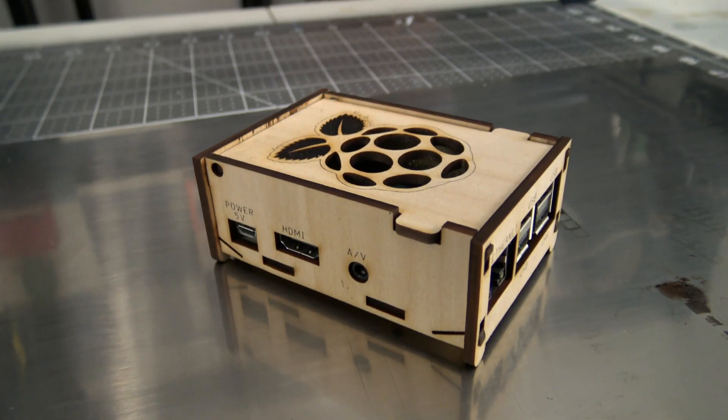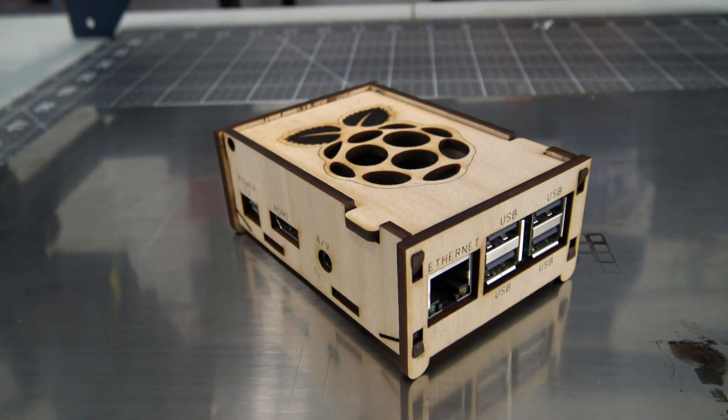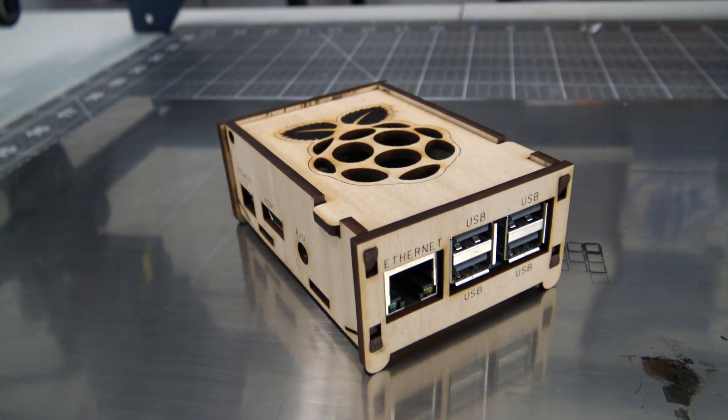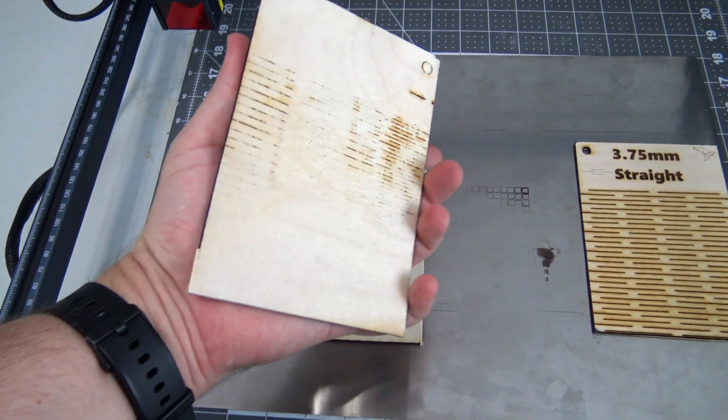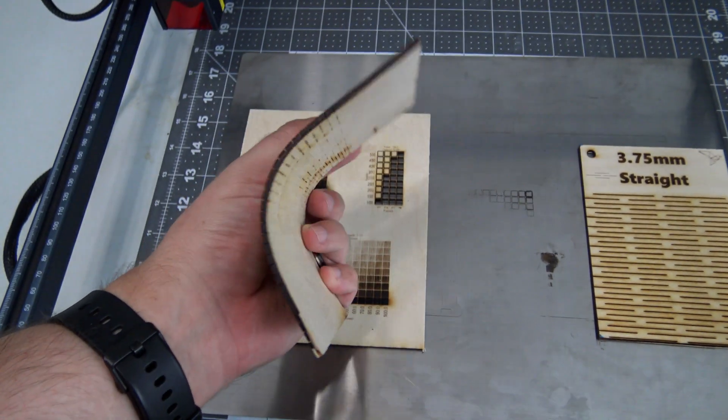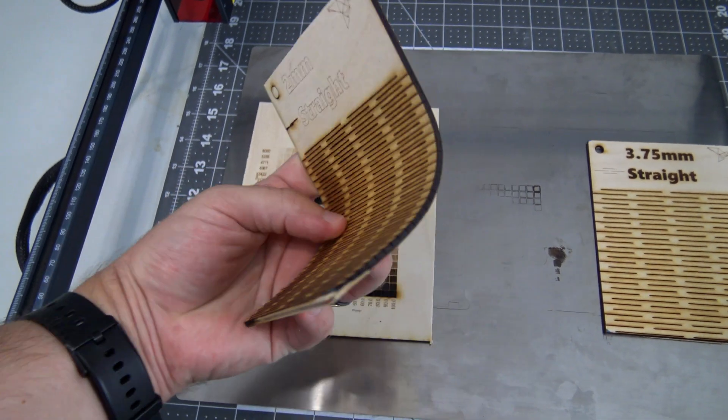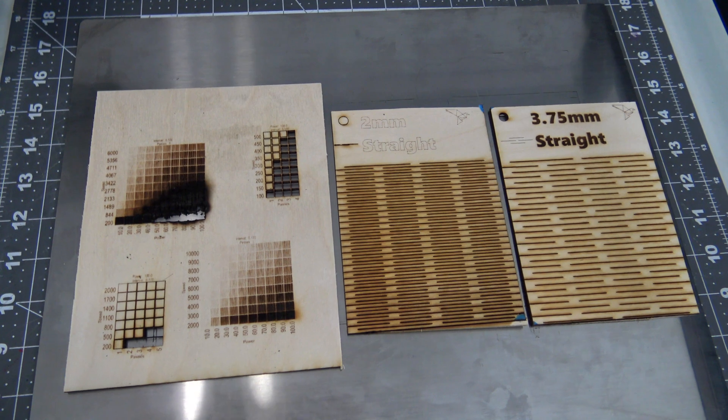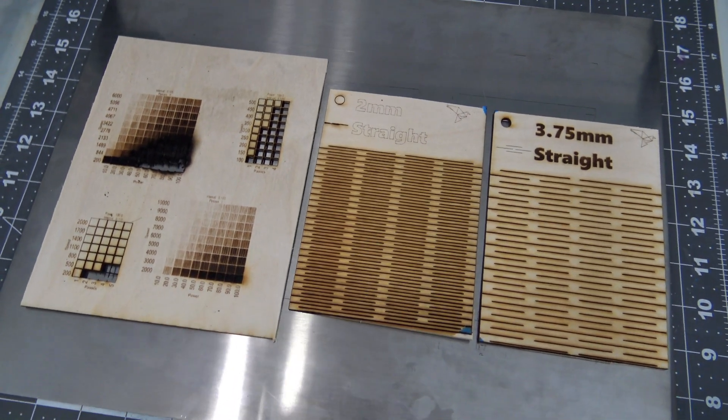I cut this Raspberry Pi case out of basswood, and all of the pieces fit together wonderfully. It can take some tests to really dial in the settings for different materials. Some of my initial tests on these living hinges didn't cut all the way through. You still get some of the bending effects, but you can see that it didn't go completely through. Thankfully, Lightburn has this wonderful material test tool to generate grids with different settings, so you can really dial in those settings.